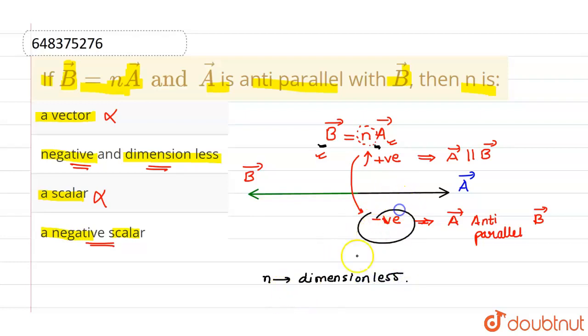So n is dimensionless and as we already discussed, n is negative. So the correct option will be option B, which says that n is negative and dimensionless. So option B is correct. I hope you understood. Thank you.